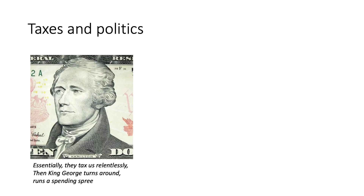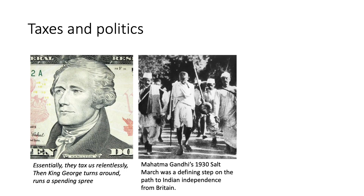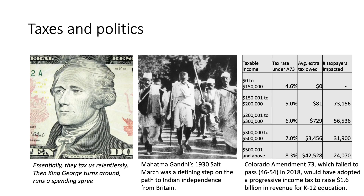Taxes and politics have been fundamental arguments since the American Revolution. In 1930, Mahatma Gandhi's Salt March was one of the primary steps toward independence from Great Britain. In Colorado, the 2018 Amendment 73 failed to pass — it would have adopted a more progressive income tax and raised revenue for K–12 education. More recently, Proposition EE taxed e-cigarettes such as Juul products, and that actually passed. The government will now increase the price and hopefully reduce the quantity purchased to reduce harm while raising revenue for education.